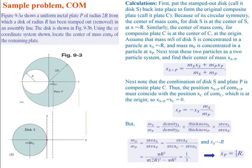Let's do an example problem. The figure shows a uniform metal plate P of radius 2r, from which a disk of radius r has been stamped out or removed. So here's our plate P, and inside that a disk S has been removed with radius r. We need to find the center of mass of P — the remaining plate — so what's the center of mass of what's left?